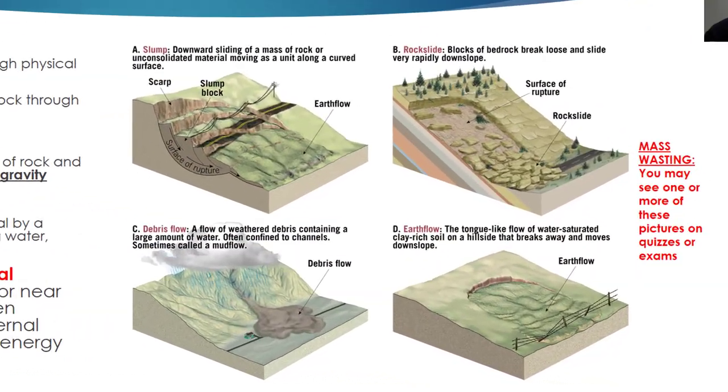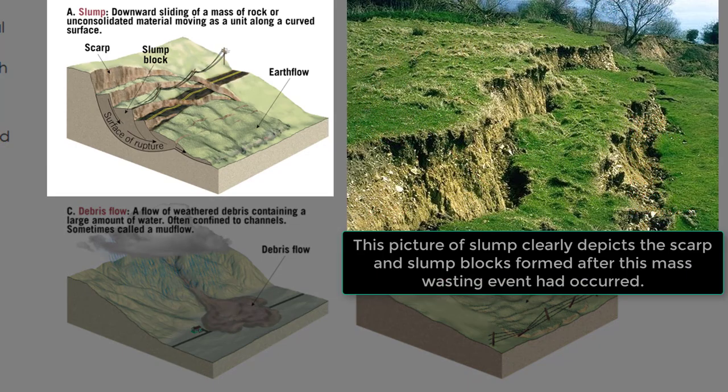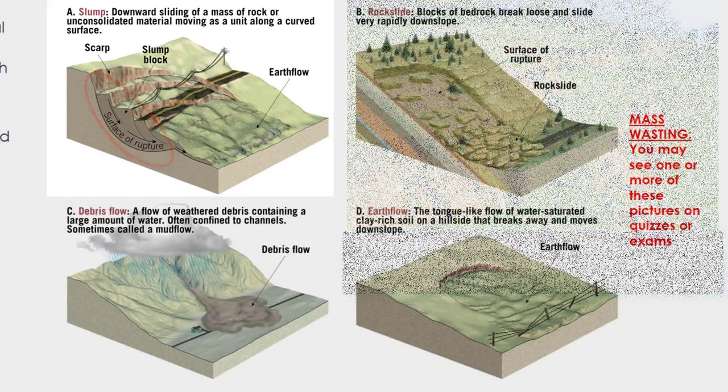Let's focus on four examples of mass wasting shown here in these images. The first example is slump — the downward sliding of rocks or other unconsolidated materials as they move along a curved surface. Take a look at the surface of rupture; it's shaped similar to a contact lens. That curved surface of rupture is what forms features like scarp and slump block.